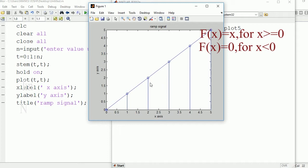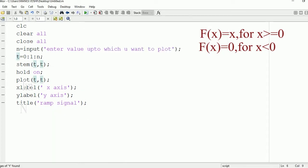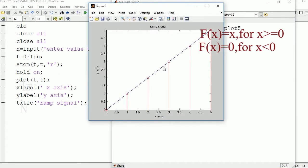Now if you want to change the color of this line, you need to change it here. Enter value up to which you want - five. Here you can see color changed to red.